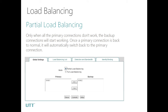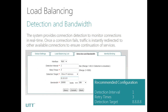In partial load balancing, only when all the primary connections don't work will the backup connection start working. Once a primary connection is back to normal, it will automatically switch back to the primary connection. In order to make the failover work more efficiently, we need to configure detection and bandwidth. The system provides connection detection for monitoring connections in real time. Once a connection fails, traffic will be redirected to other available connections to ensure continuation of services.